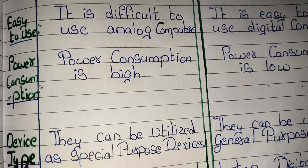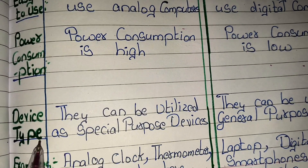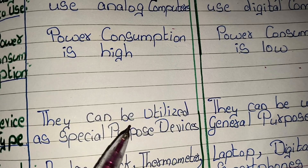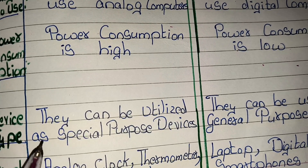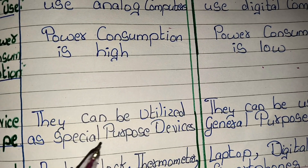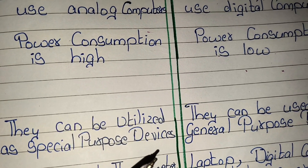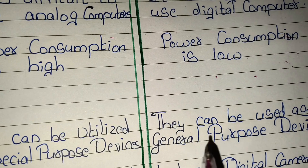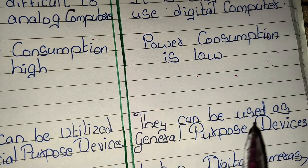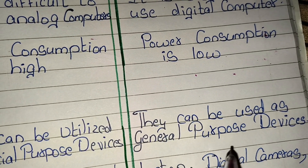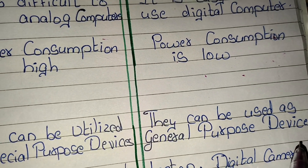Device type. Analog computers can be utilized as special purpose devices. Digital computers can be used as general purpose devices.